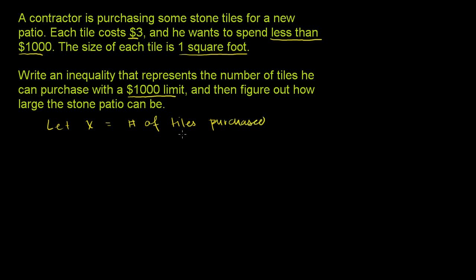The cost of purchasing x tiles, at $3 each, is going to be 3x. So 3x is the total cost of purchasing the tiles.